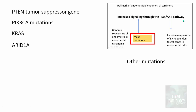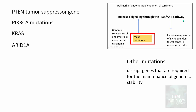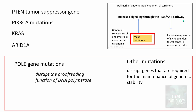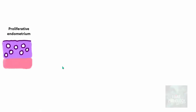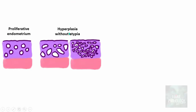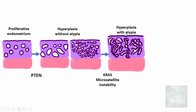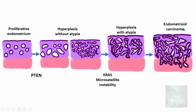Apart from these PI3K/AKT pathway mutations, there are other mutations that disrupt genes required for the maintenance of genomic stability. These include POLE gene mutations — which disrupt the proofreading function of DNA polymerase epsilon — and TP53 gene mutations. In the progression model, PTEN mutation is seen early in hyperplasia without atypia, followed by KRAS mutation and microsatellite instability, progressing to endometrioid carcinoma with additional ARID1A, PIK3CA, and FGFR2 mutations.